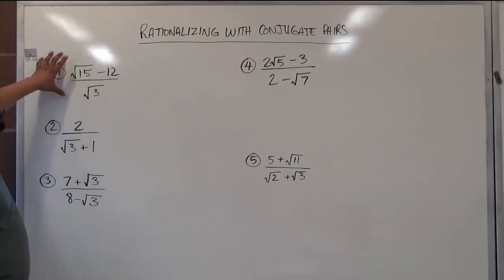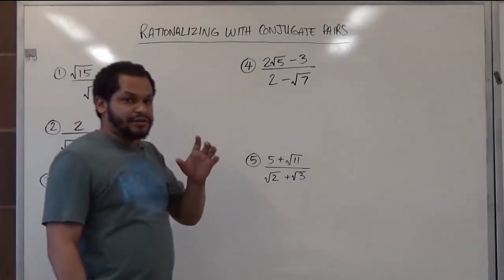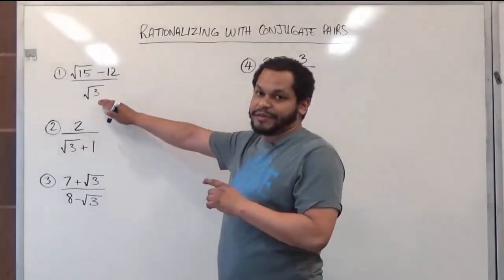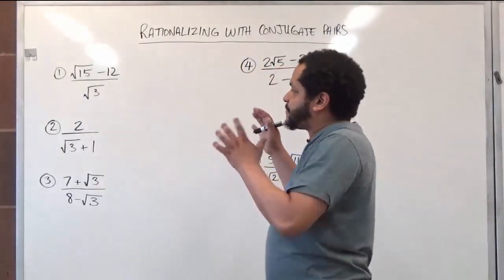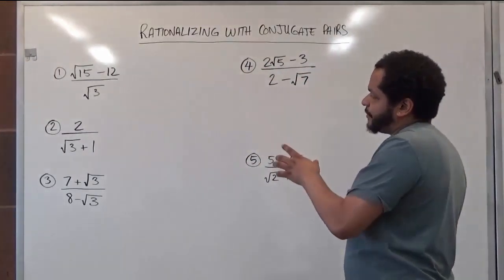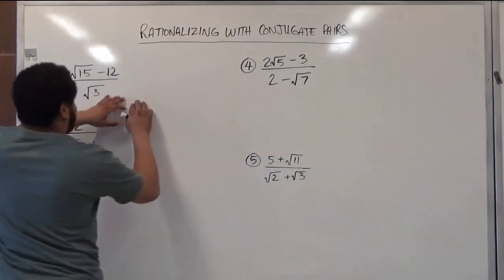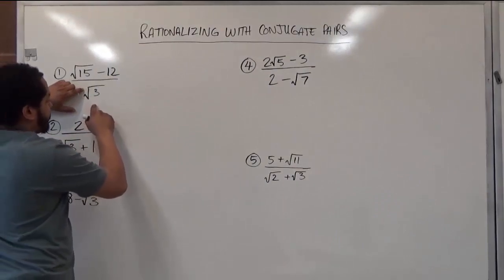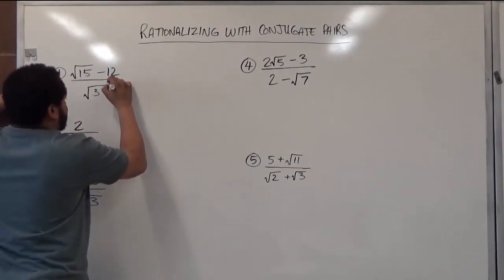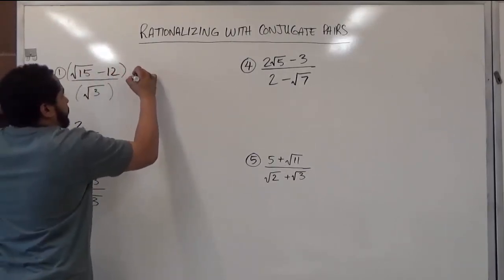So in the case of just regular rationalization, the only thing we have to do is get rid of the square root in the denominator. And since we just want to get rid of the square root of the denominator, we only have to multiply the numerator and the denominator by the same square root that we have in the denominator. So here we're going to be multiplying the top and bottom by the square root of 3.